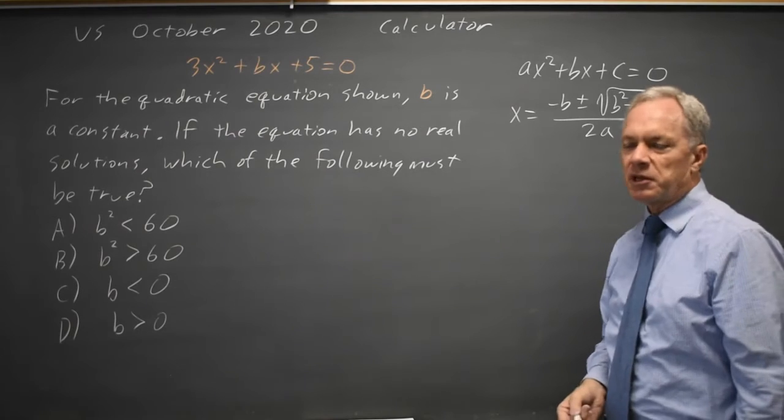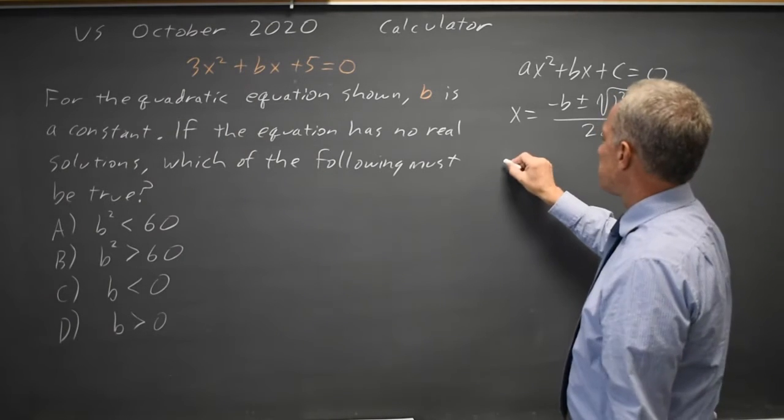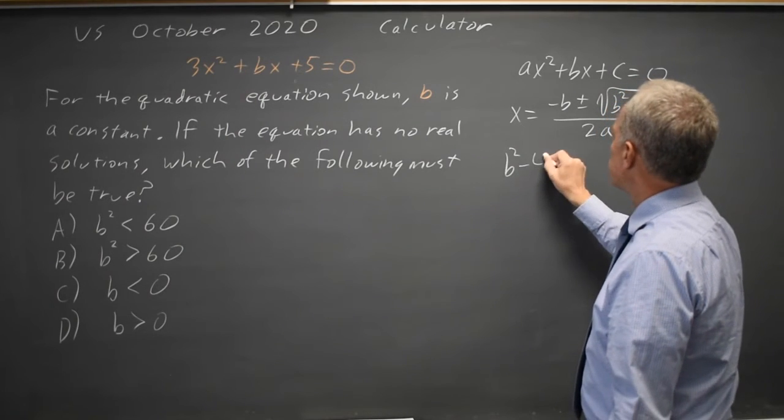That's the quadratic formula, but we only need the expression under the square root. B squared minus 4ac.